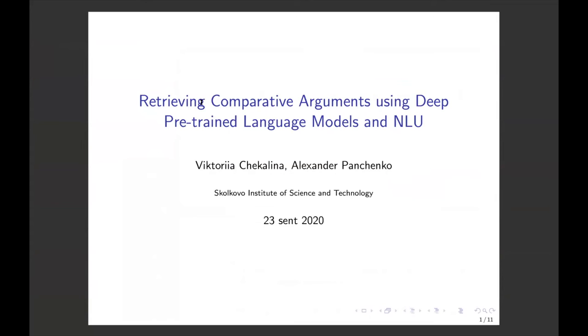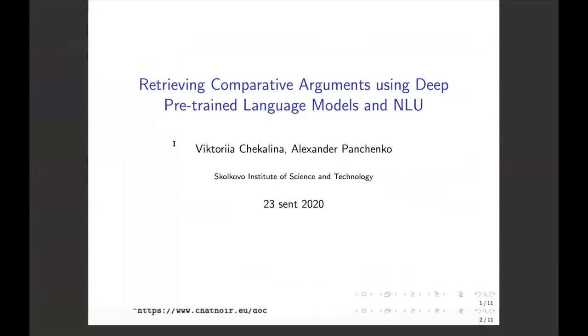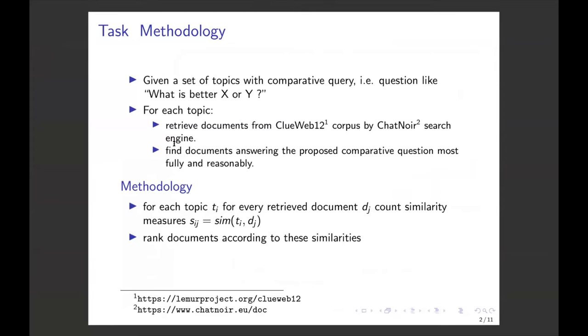Today I will talk about retrieving comparative arguments using deep pre-trained language models at NTNLU. This approach was applied to the second shared task. The task was described earlier. We have a set of topics. Every topic contains a comparative query, and for every topic we can retrieve some documents. We should rank documents according to their relevance and argumentativeness.